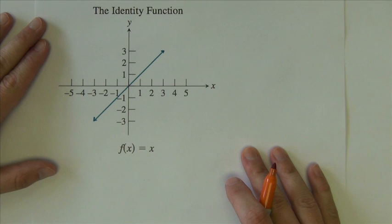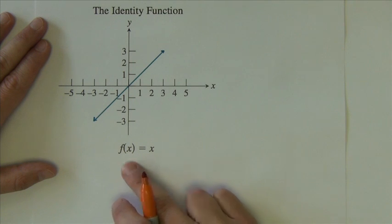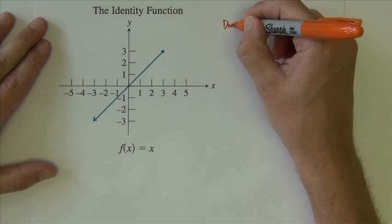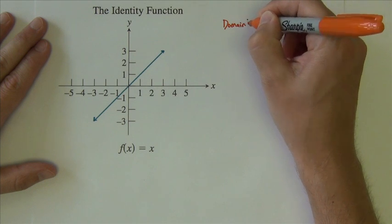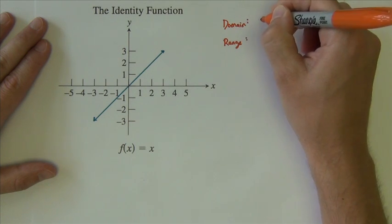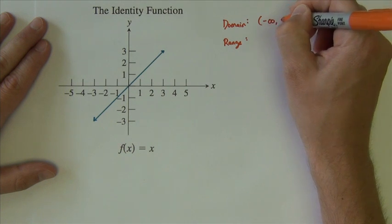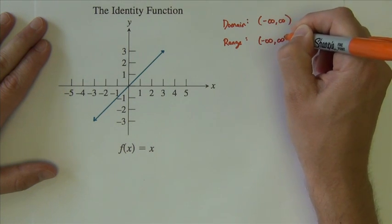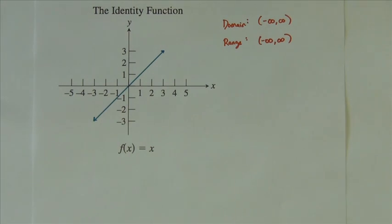The first of these twelve basic functions is your basic linear function. It's called the identity function, f of x equals x, or y equals x. It has a domain and a range that are both the same: domain and range are negative infinity to positive infinity.